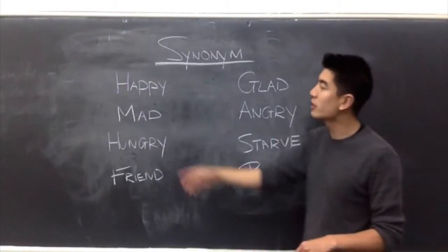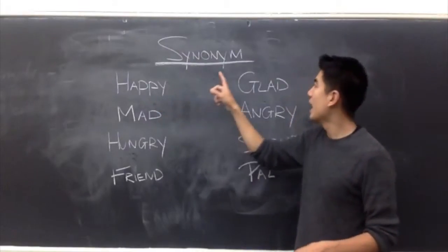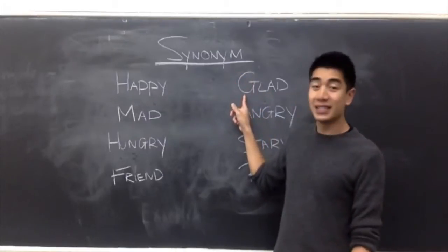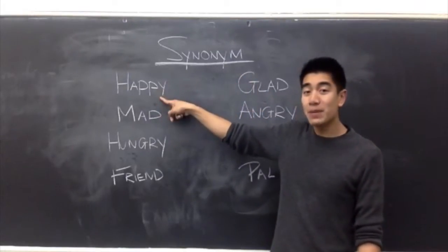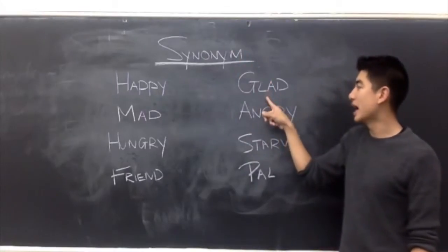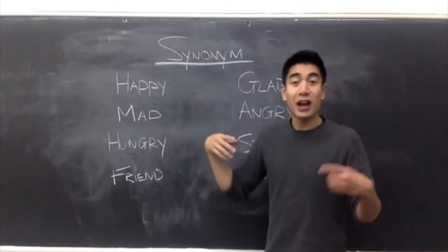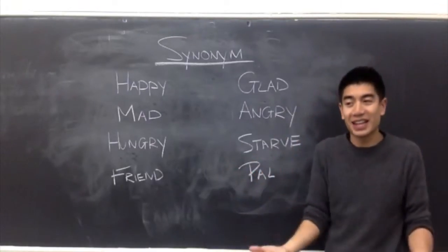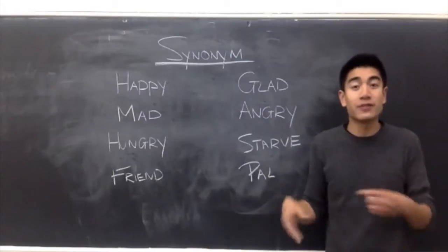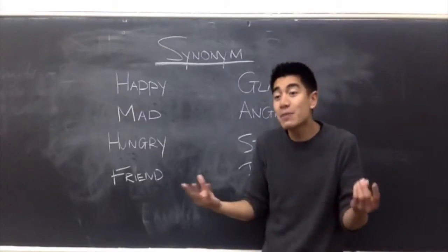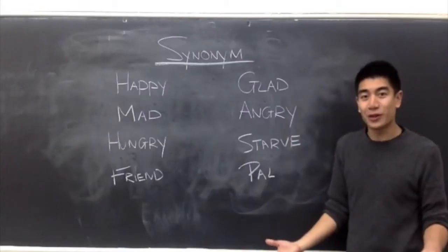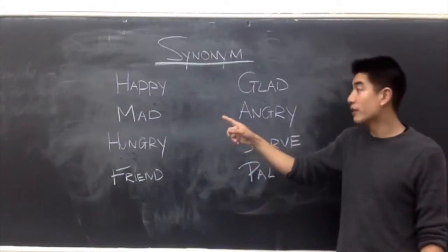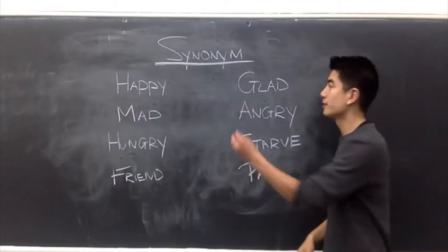For example, right here is the word happy, and over here is the word glad. Glad is the synonym of happy, and happy is the synonym of glad. Happy means if you're happy, you're cheerful, you're having fun, you are excited. Glad has a similar feeling too. It's a very positive feeling. You're happy, you're excited, you're feeling great. These two have similar definitions, similar meaning, but of course they're different words. Right?